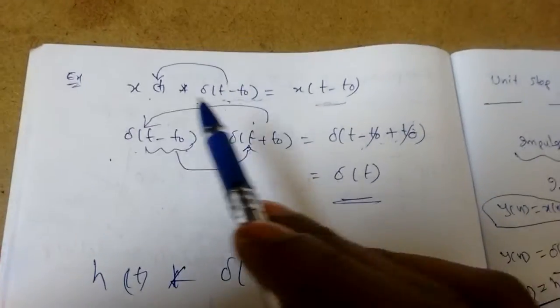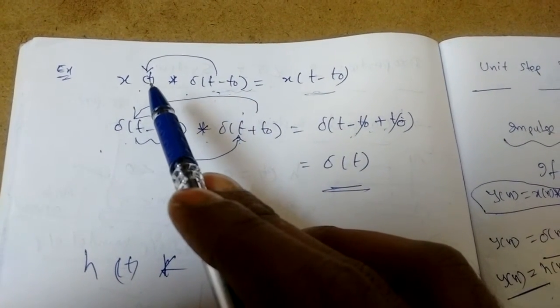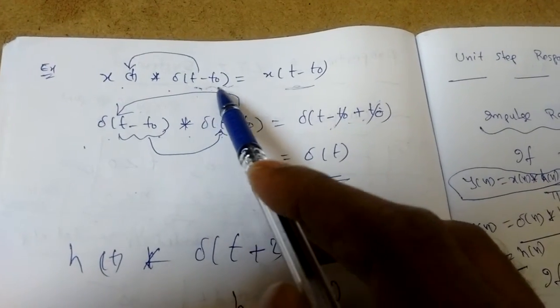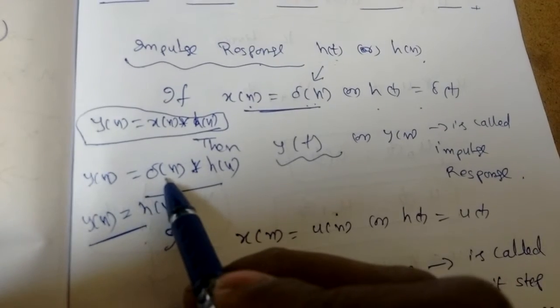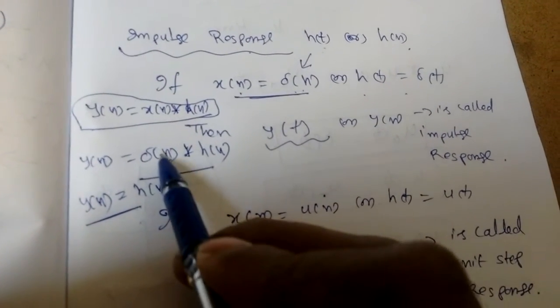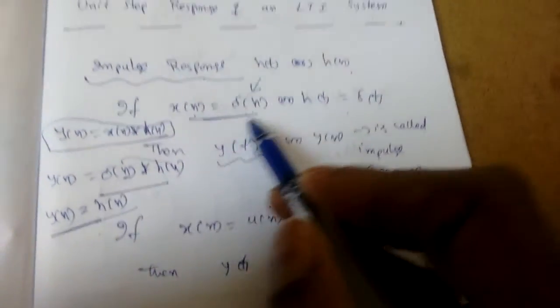I already explained in the previous lecture: if you convolve x(t) with delta(t - τ), in place of x(t), we substitute the overall delta function. Similarly, x of delta(n) convolved with h(n), in place of n we will place delta, so it becomes h(n) only. That's why it is called impulse response.